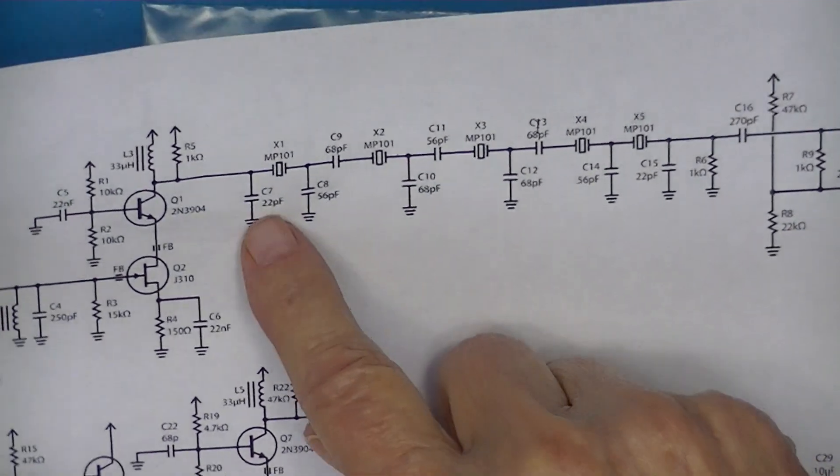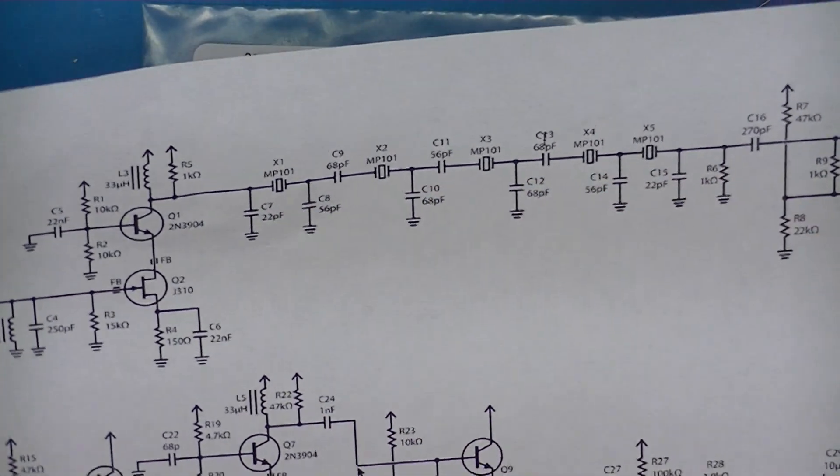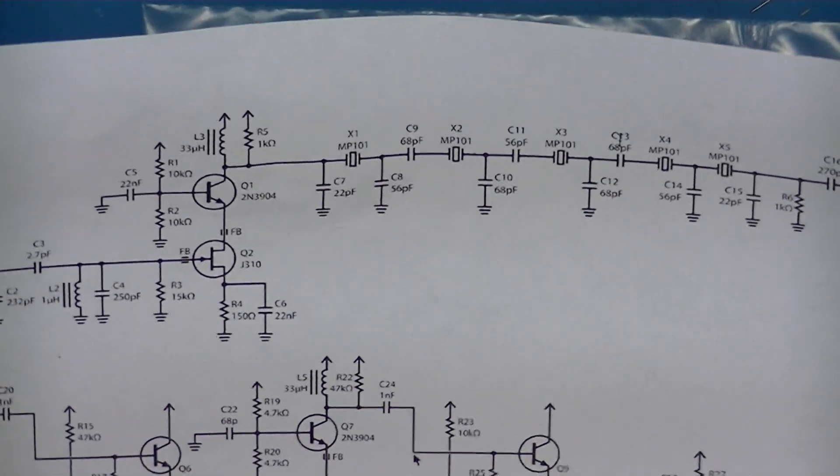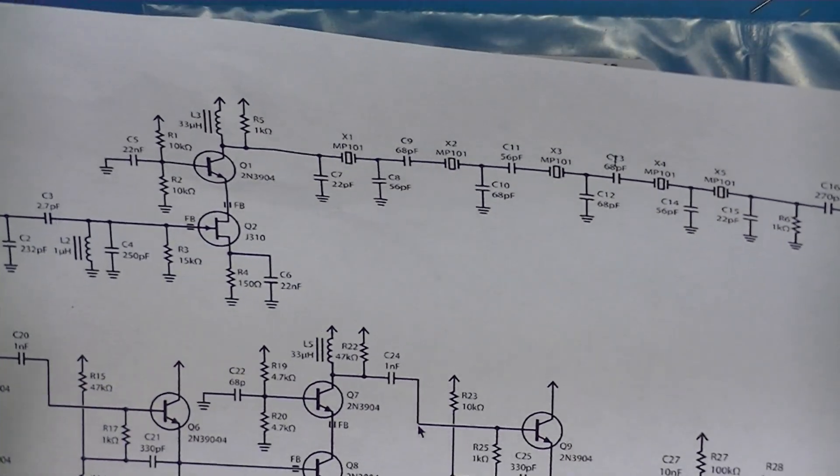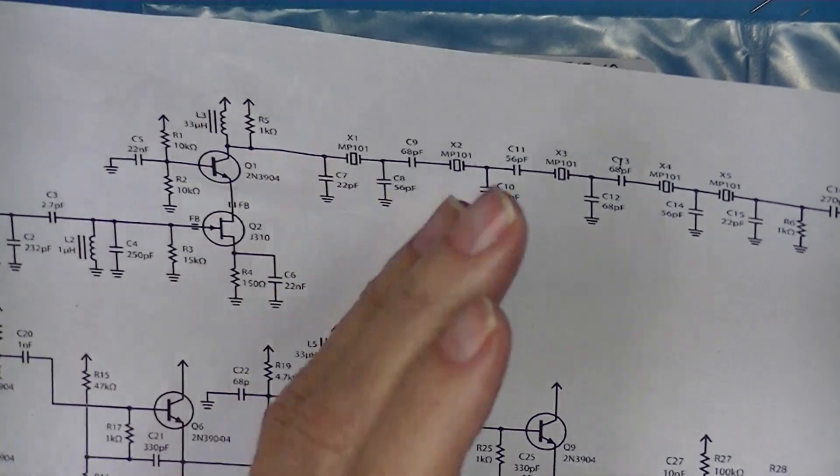So he uses five filters in his receiver. And the one I'm building uses four. Two before the op amp and two after the op amp.